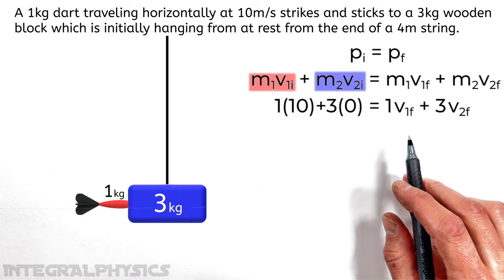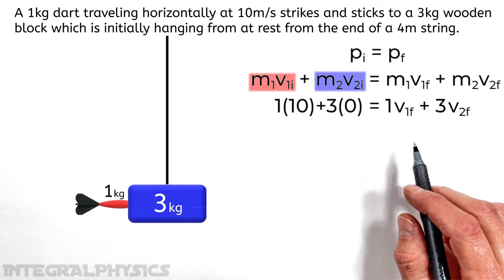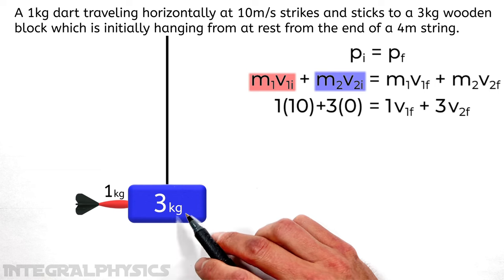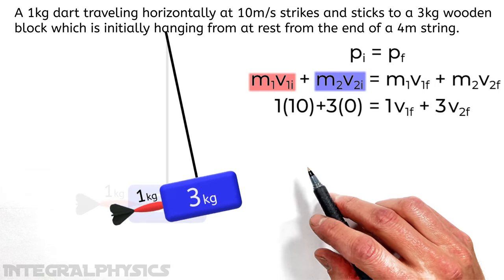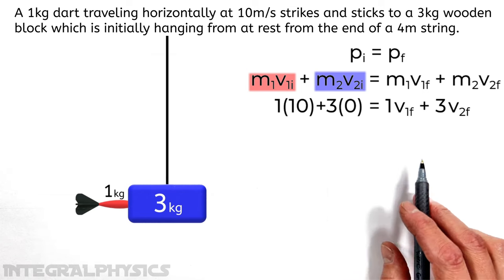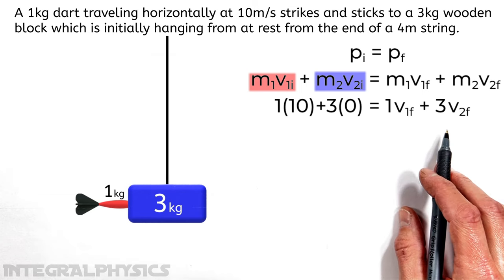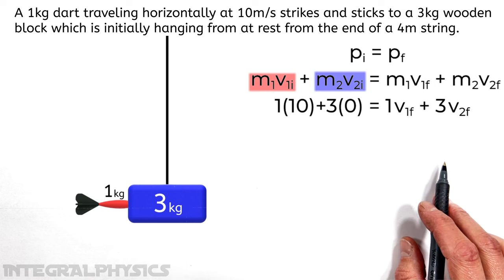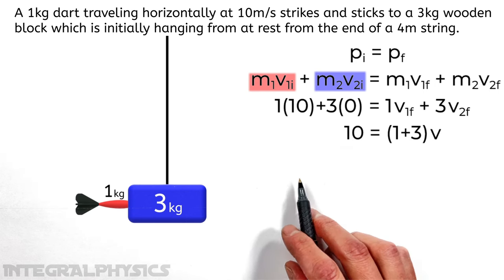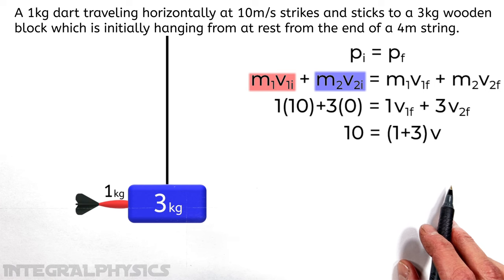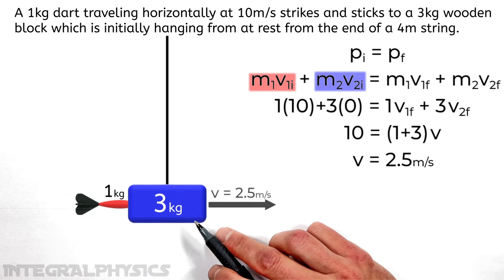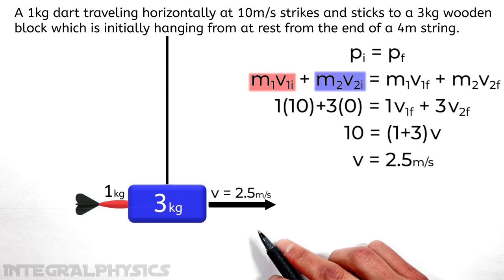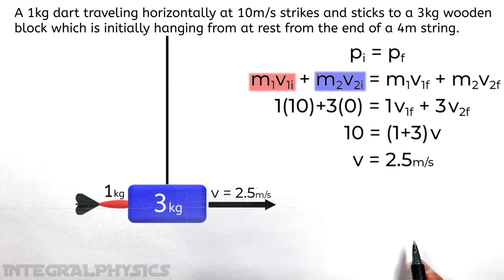Now the important thing to recognize up here is that when the dart strikes the block and they move off and swing on the end of the string over here, they're going to have this same final velocity. So rather than talking about two different final velocities, we're going to be able to factor out this velocity here. So we're just left with this expression. And solving for that velocity, we get the velocity of the dart and the block just after this collision is 2.5 meters per second.